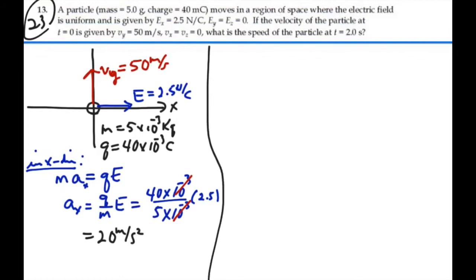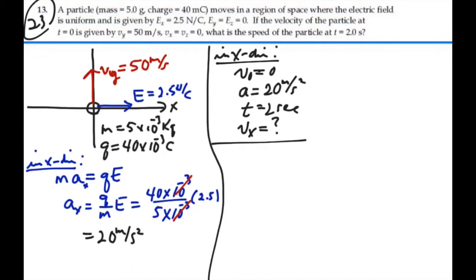So, in the x direction, we have an initial velocity of 0, an acceleration, which we just found, of 20 meters per second squared, a time of 2 seconds, and we want to find our final x velocity. So, it's kinematics at its best.